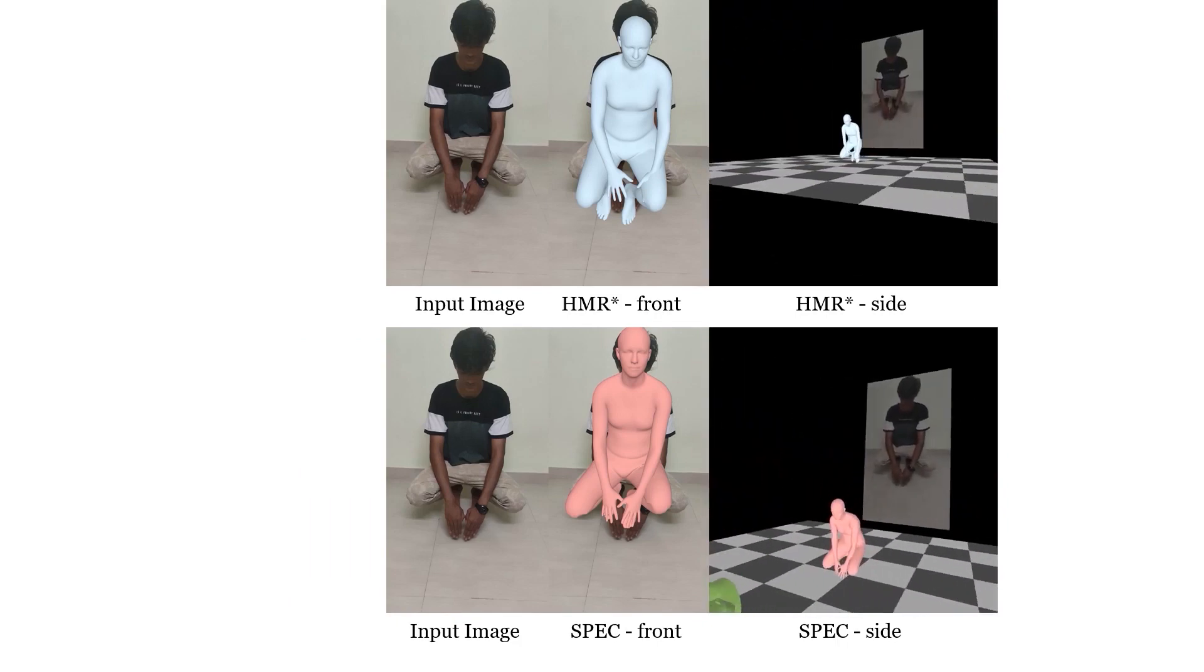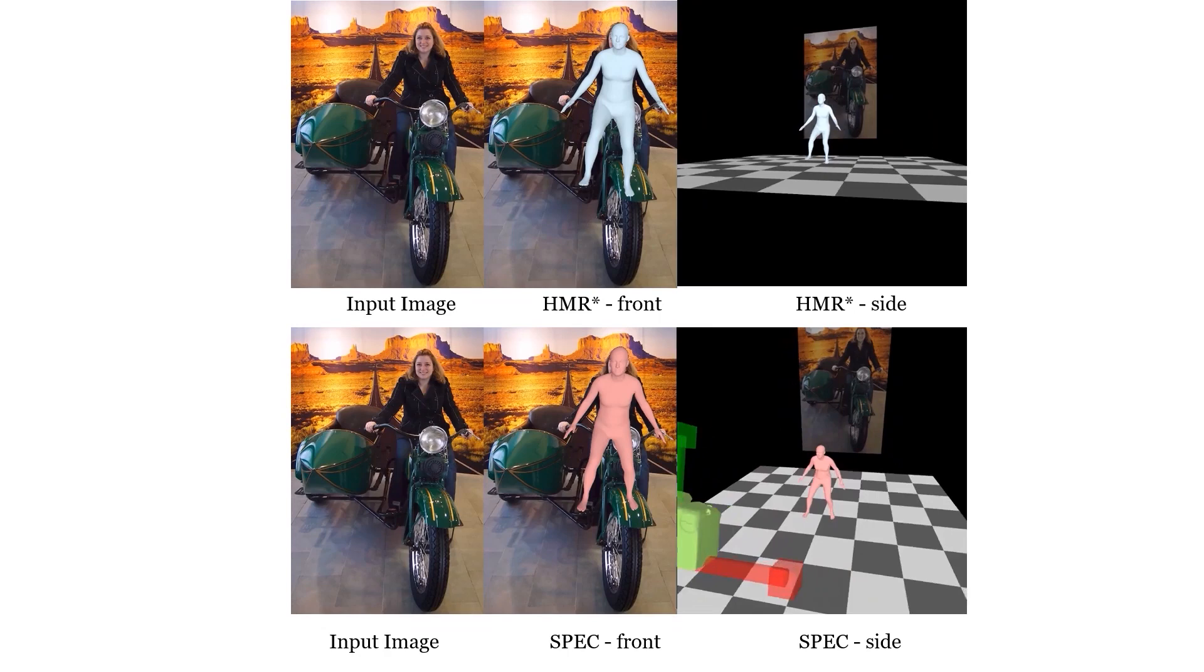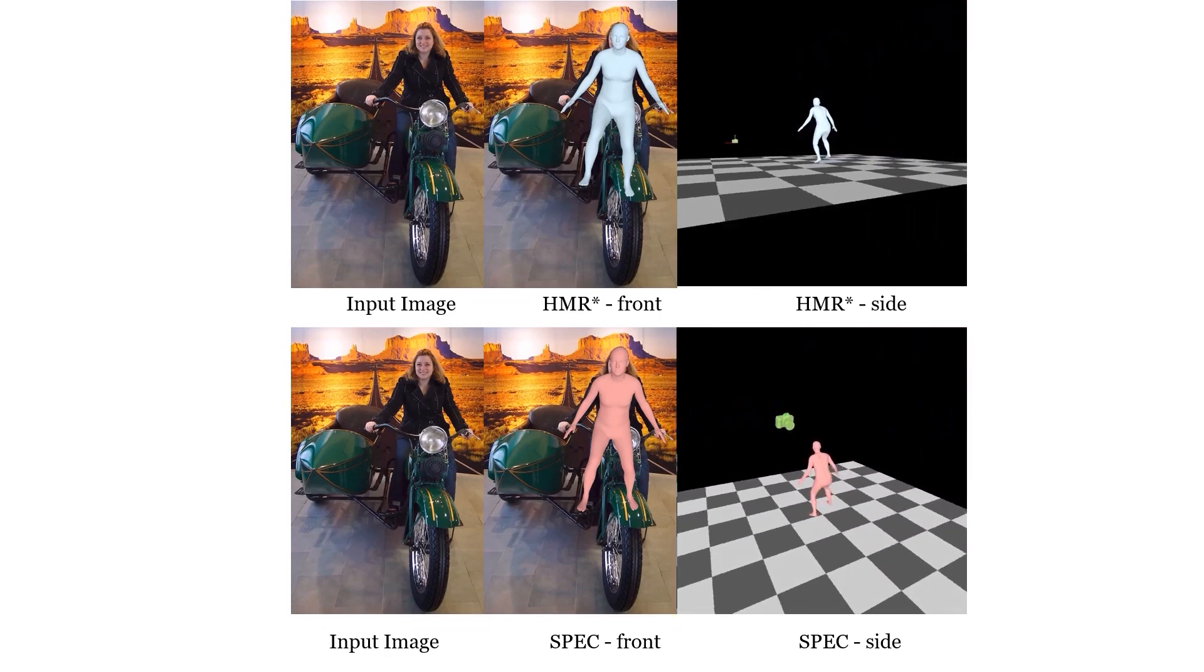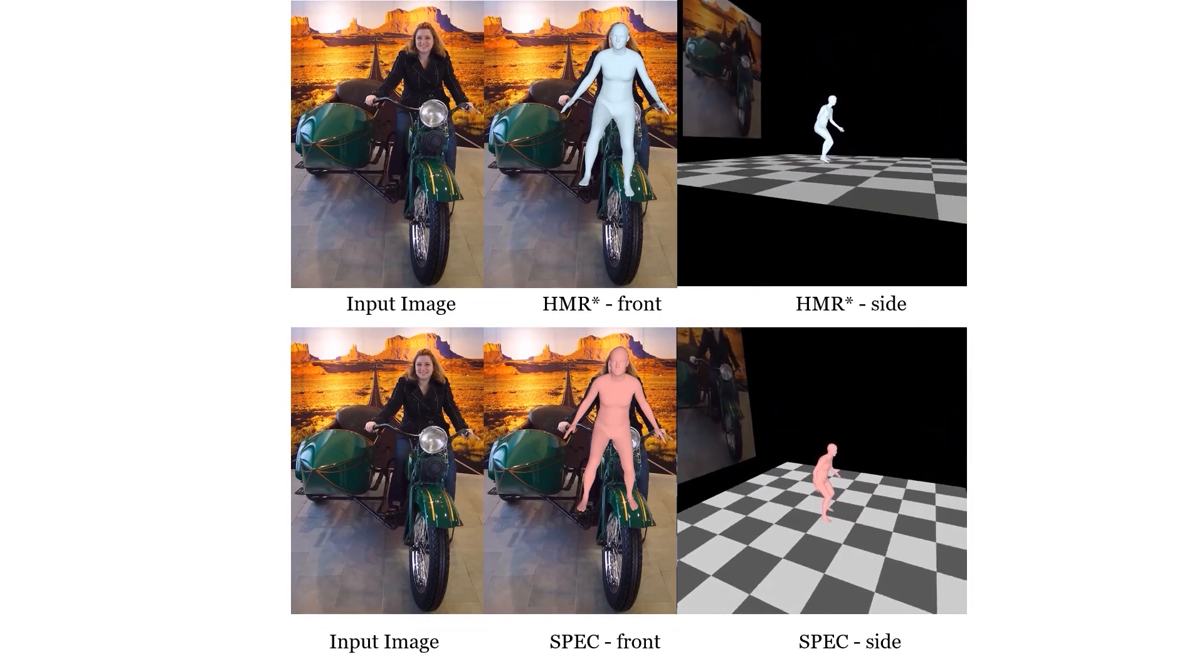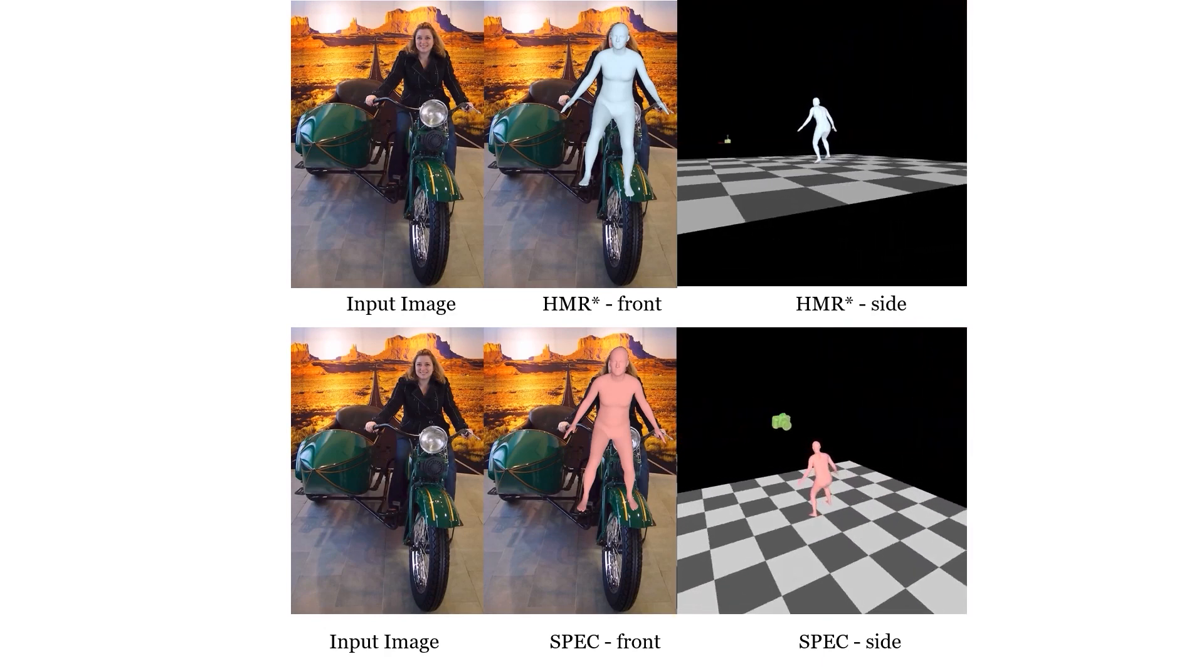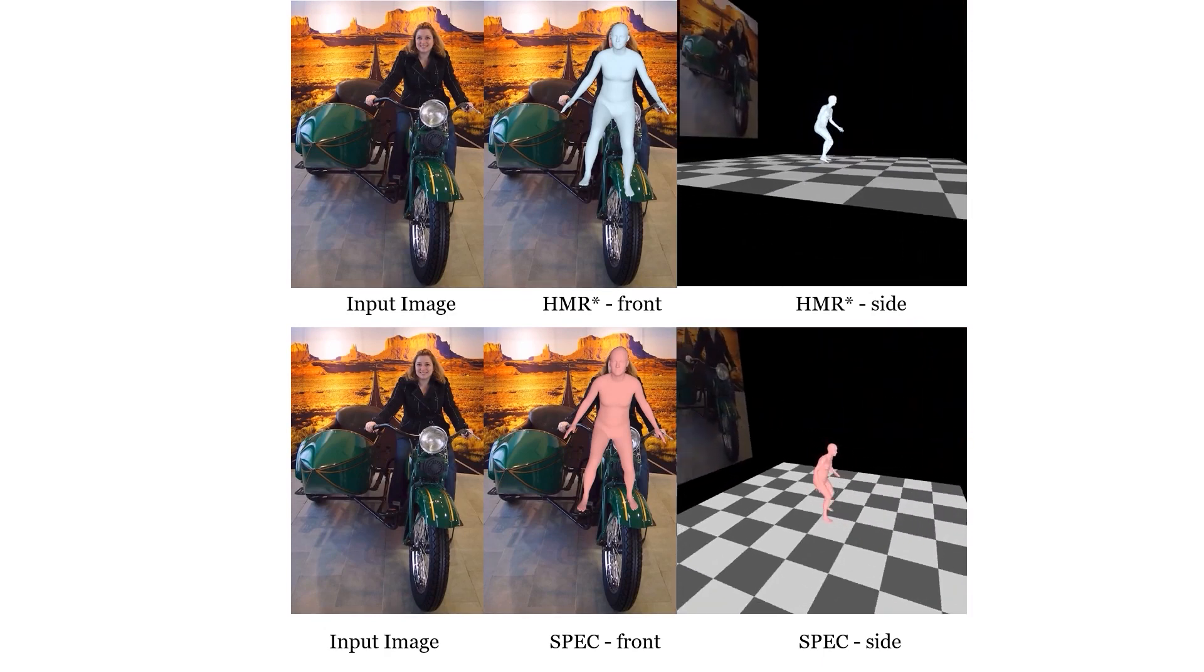When camera rotation is far from the identity, previous methods estimate unnatural global orientation. The CAM-CALIB camera rotation is used by SPEC to predict more plausible body orientations.